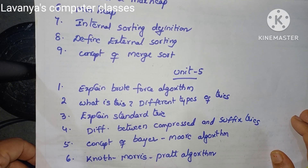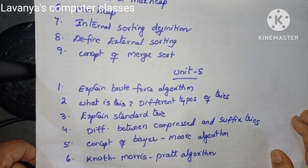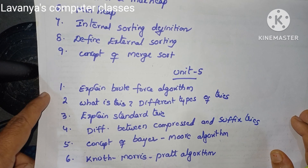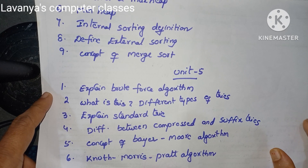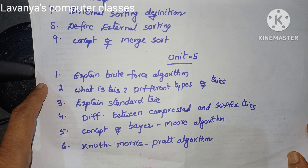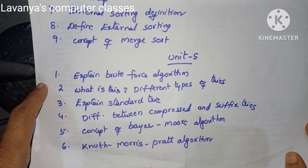The last unit questions are: explain brute force algorithm; what is a trie and the different types of tries; explain standard trie; difference between compressed and suffix tries; explain the Boyer-Moore algorithm with an example; and explain the Knuth-Morris-Pratt (KMP) algorithm.